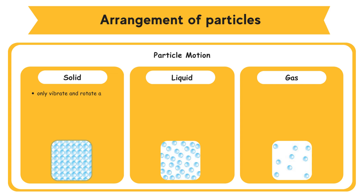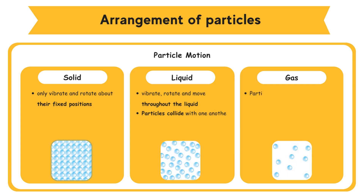Arrangement of Particles — Particle Motion. For solid, particles can only vibrate and rotate about their fixed positions. For liquid, particles can vibrate, rotate, and move throughout the liquid. The particles collide with one another. For gas, particles can vibrate, rotate, and move freely. Collision rate is higher than the collision rate in liquid.